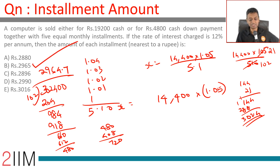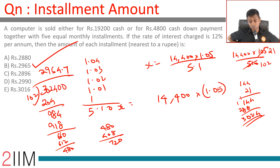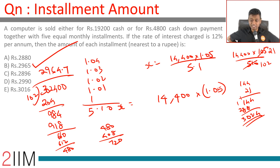So the answer is approximately ₹2,965. In all equal installment problems, the key idea is: the lump sum ₹14,400 growing at interest for five months equals the sum of each installment x growing for its remaining months — that is, 14,400 into 1.05 equals x(1.04 + 1.03 + 1.02 + 1.01 + 1). After that it's just a computational challenge, nothing more.